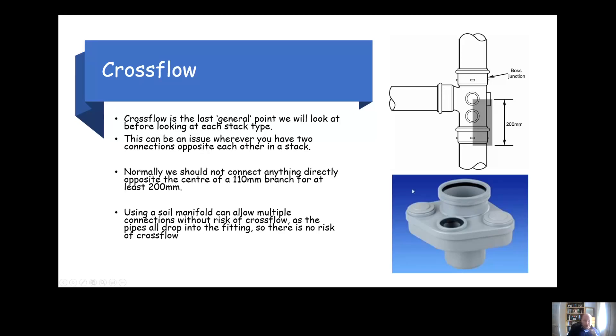A good way to ensure that you can make appropriate connections is by using a soil manifold. You can make three or four connections into a soil manifold depending on what one you buy, and the good thing about these is that the pipes are turned down into the soil manifold, which means that they are not going to be subject to the issues from cross flow.